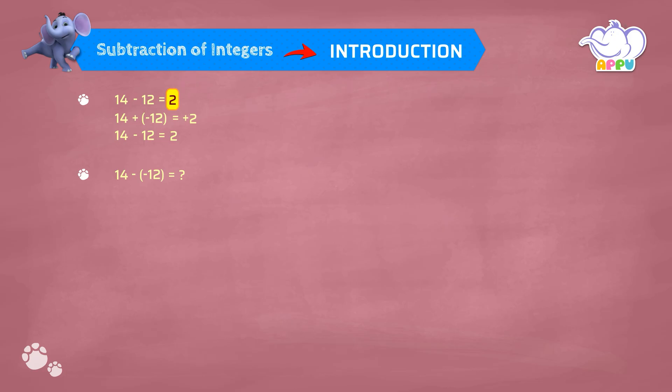We have 14 minus a negative 12. The rule of subtracting integers is that we change it into an addition problem, because it is always easier to work with addition. Nothing will change with the first number. We can rewrite this as 14 plus the opposite sign of negative 12, which will be positive 12.